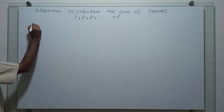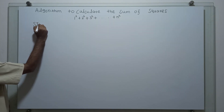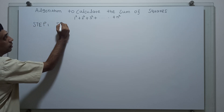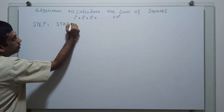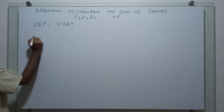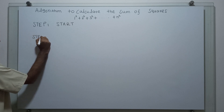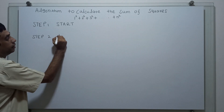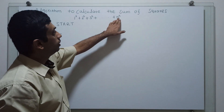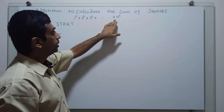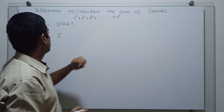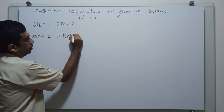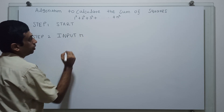Step 1: logical start of the algorithm. Step 2: we have to obtain the input from the user for the range n, so we have to calculate the sum of the squares up to the given range. Input n — I am storing the range in the variable n.